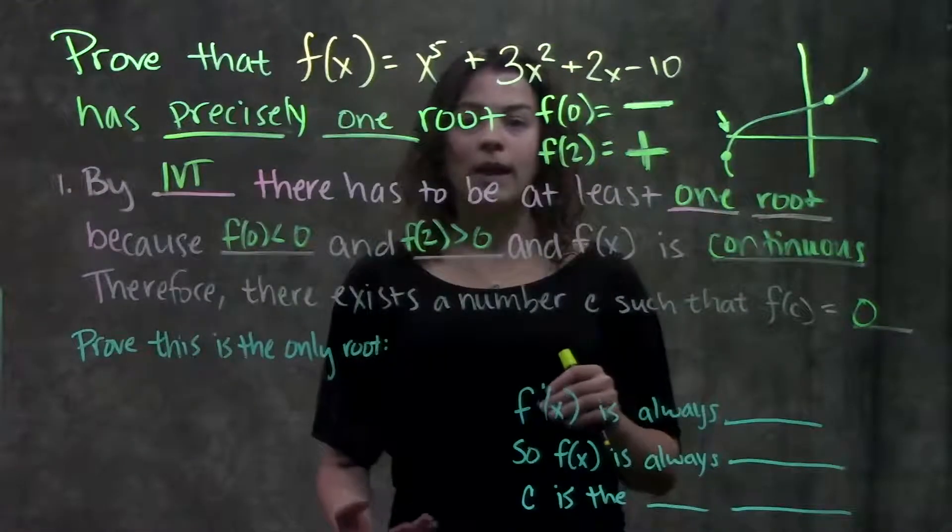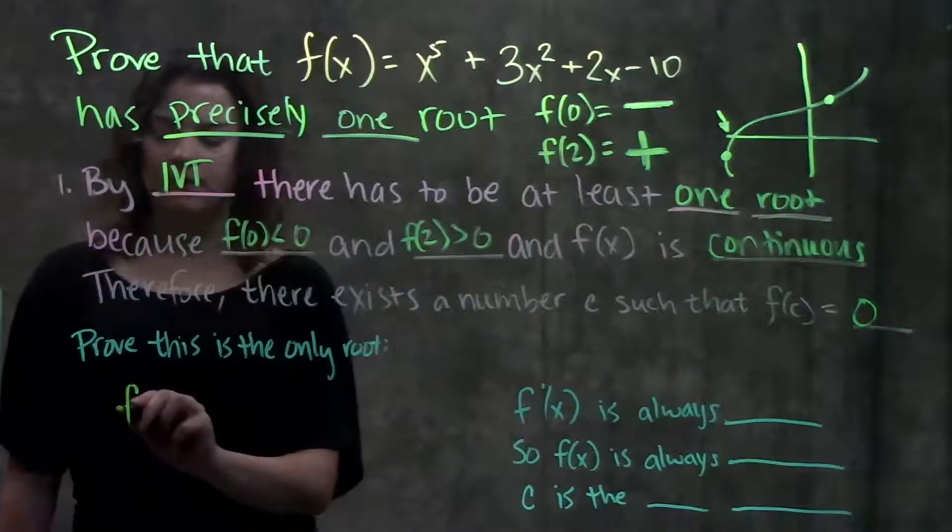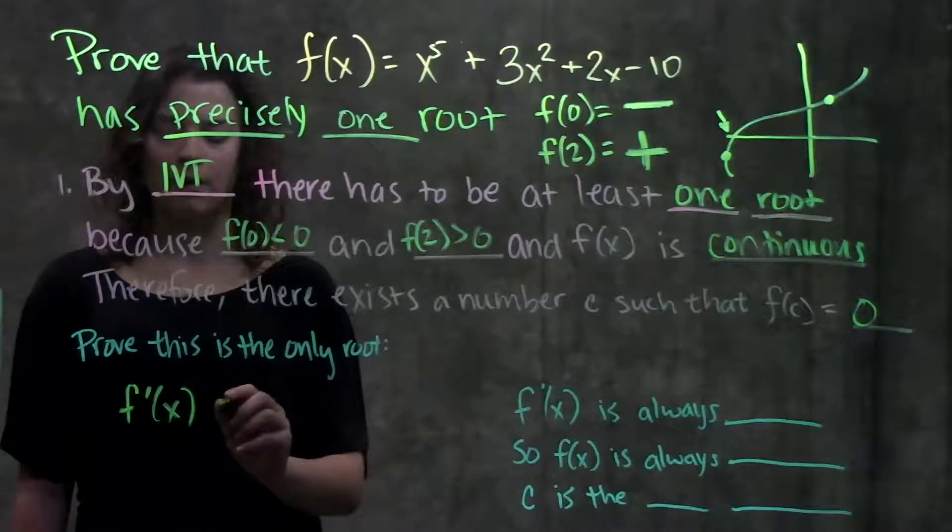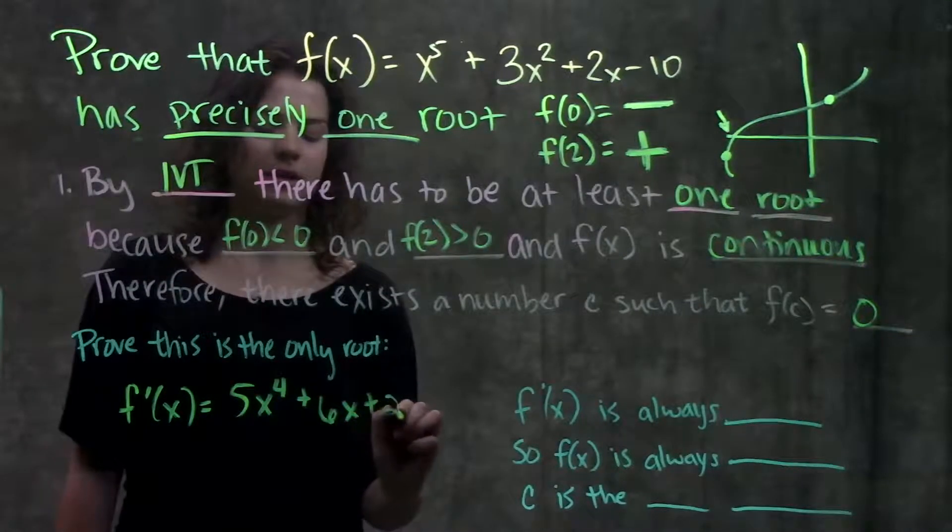Like we said, we're going to end up taking the derivative of this function. So let's go ahead, take the derivative. f'(x) using our power rule, this just becomes 5x^4 + 6x + 2.